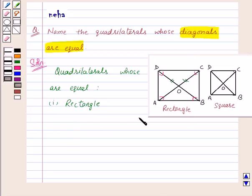Now consider a square. We know that a square is a quadrilateral which satisfies all the properties of a rectangle. Thus we can say that the diagonals of a square are also equal. So the second quadrilateral whose diagonals are equal is square.